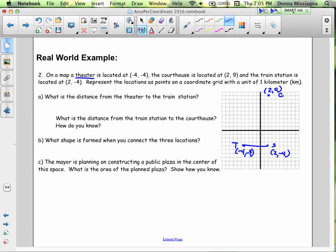Let's connect those points to show the paths to each of our locations - the theater, the courthouse, and the train station.